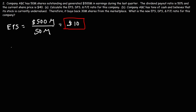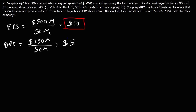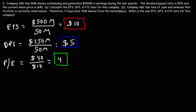Now let's calculate the DPS. The dividend payout ratio is 50%, meaning half of the earnings will be paid out in dividends. Half of $500 million is $250 million. That $250 million is spread over 50 million shares, so each investor receives $5 in dividends per share — which is quite nice relative to a stock price of $40. Now the P/E ratio: the price of $40 divided by earnings per share of $10 gives a P/E ratio of 4, which means the company is undervalued.